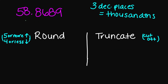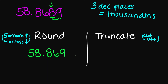Let's try 58.8689. Three decimal places puts me right here at the 8. If I look next door, I have a 9, which is more than 5, so I'm rounding up — this 8 becomes a 9, giving 58.869. And if I were to truncate, I cut it off right here, so the answer is 58.868.